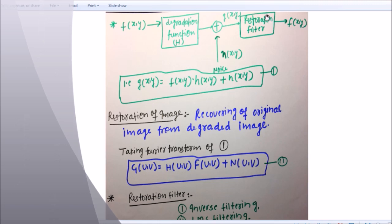And from degraded image we can get the original image with the help of restoration filter. So g(x,y) equals f(x,y) dot h(x,y). H(x,y) is your degradation function, f(x,y) is your original image function, and n(x,y) is your noise.